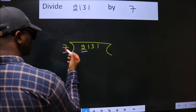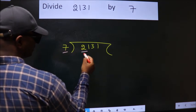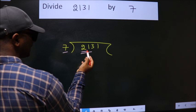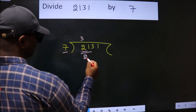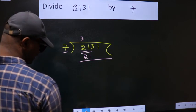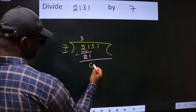2 is smaller than 7, so we should take 2 numbers: 21. When do we get 21 in the 7 table? 7 threes 21. Now we should subtract. We get 0.